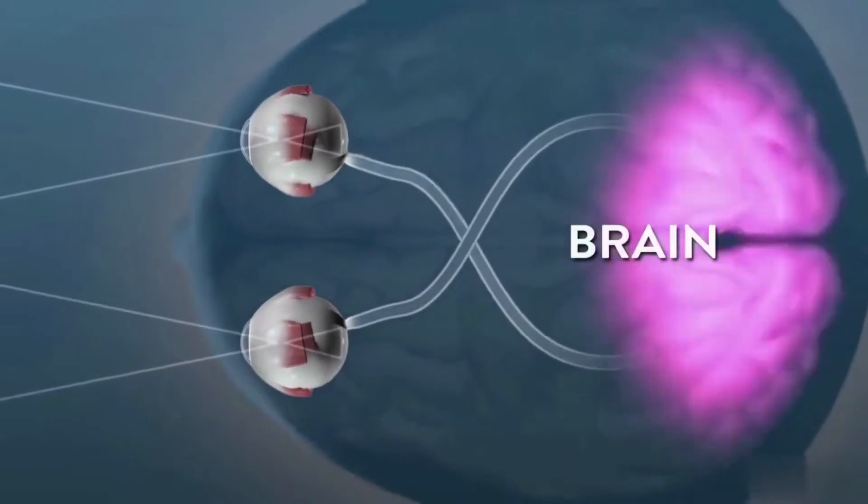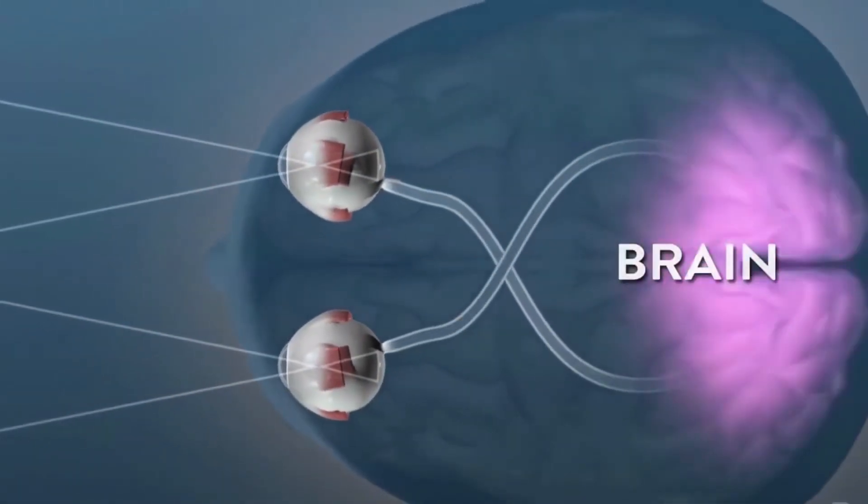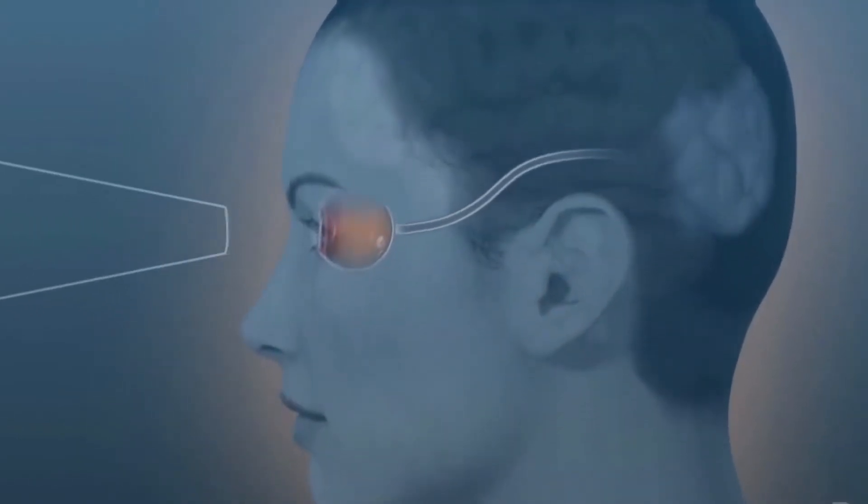These impulses then travel through the optic nerve into the primary visual cortex, which is located in the most posterior portion of the brain's occipital lobe. While it may sound like a lengthy process, it takes only about 13 milliseconds.